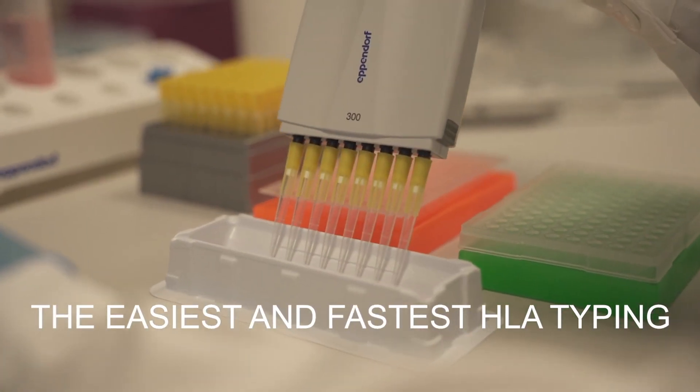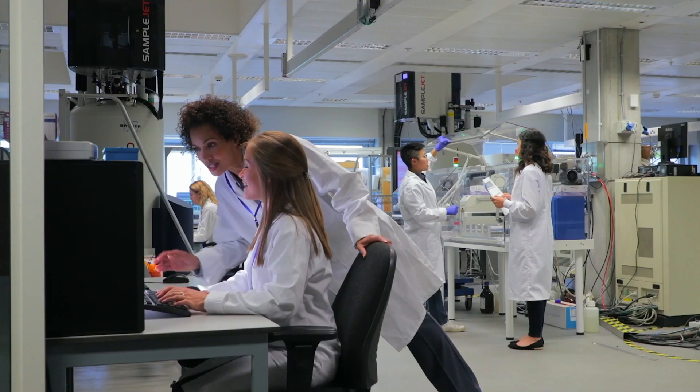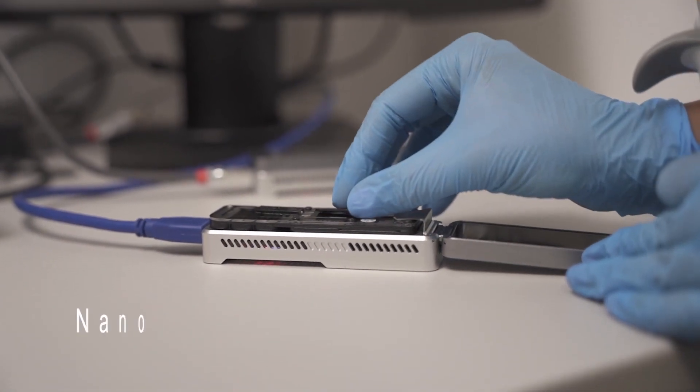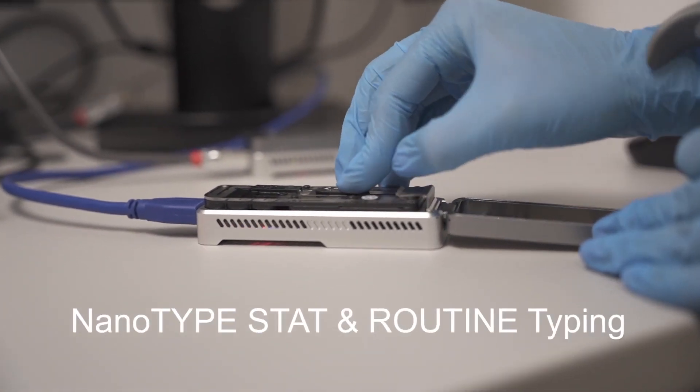The NanoType library preparation is fast and easy. Labs can scale up from 1 to 96 samples and can simply do urgent or reflexive testing of single samples or registry typing of multiple samples.